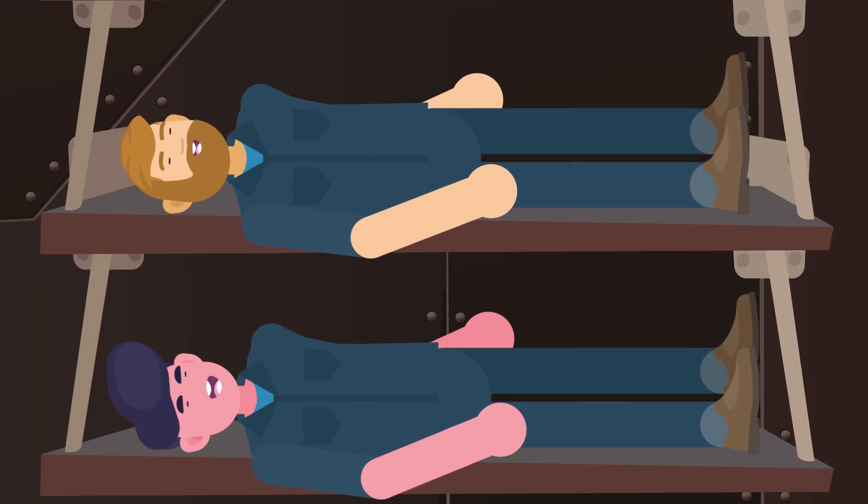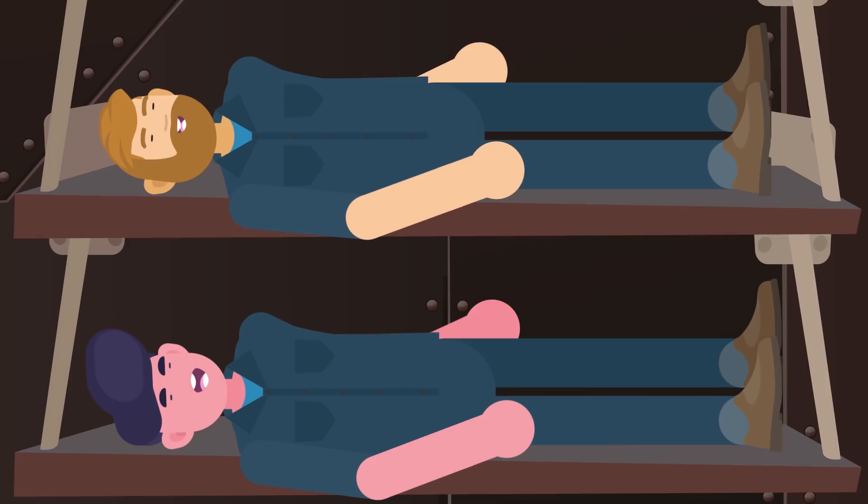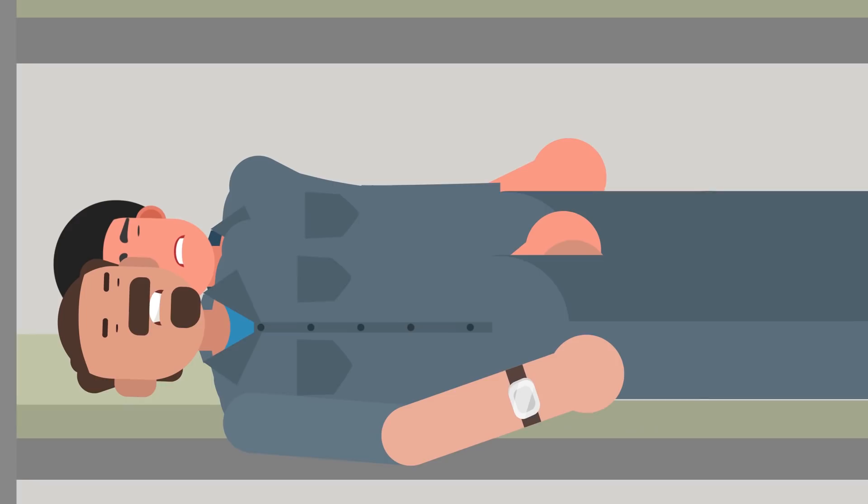At least you're not hot bunking like they do on submarines though, although in wartime that could change at a moment's notice. Aircraft carriers have in the past been used to ferry troops around, and that big flight line still needs to be kept clear for carrier operations, which means everyone below deck is going to be sharing everything, including bunks.